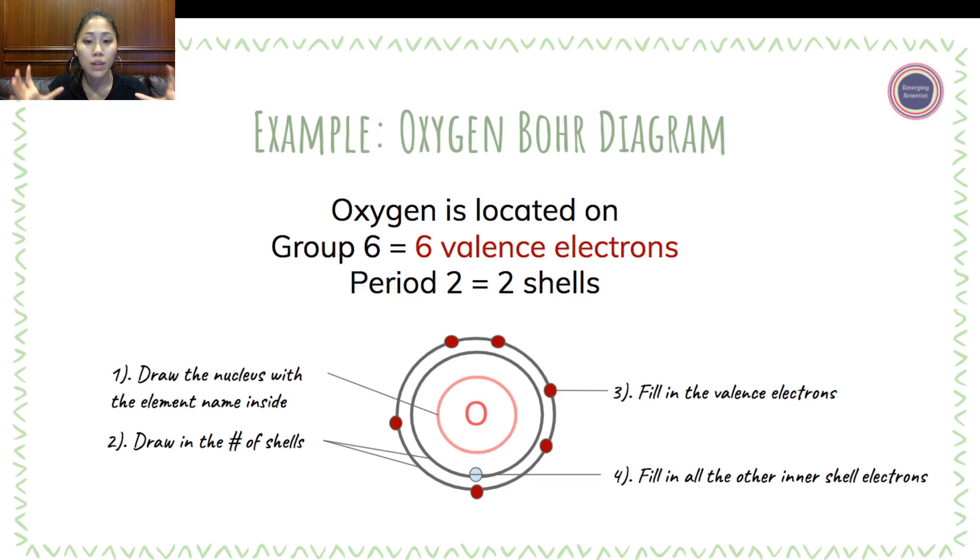So it means that when we're drawing the inner shells, it must be full. And so the inner shell is only the first shell in this case, and the first shell can only contain two electrons, and hence we draw the two electrons in as noted in blue.